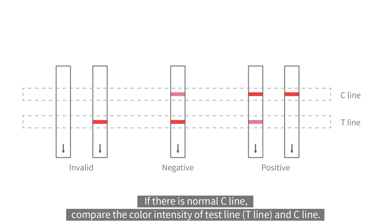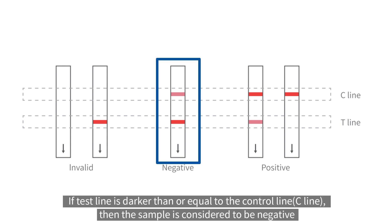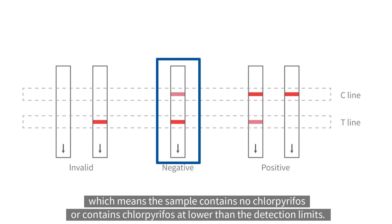If there is normal C line, compare the color intensity of test line and C line. If test line is darker than or equal to the control line, then the sample is considered to be negative which means the sample contains no chlorpyrifos or contains chlorpyrifos at lower than the detection limits.